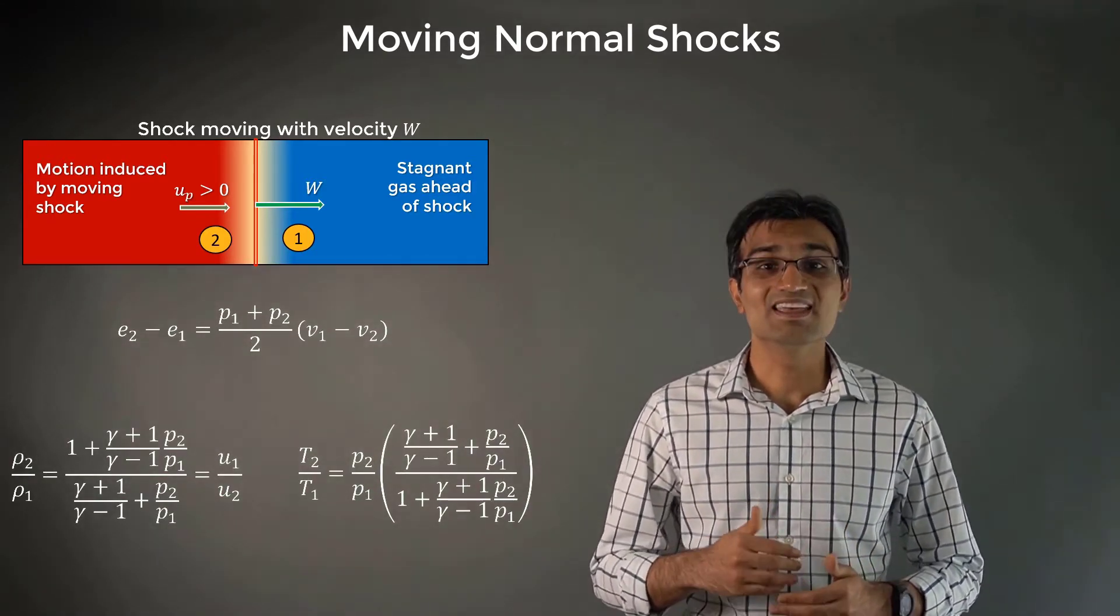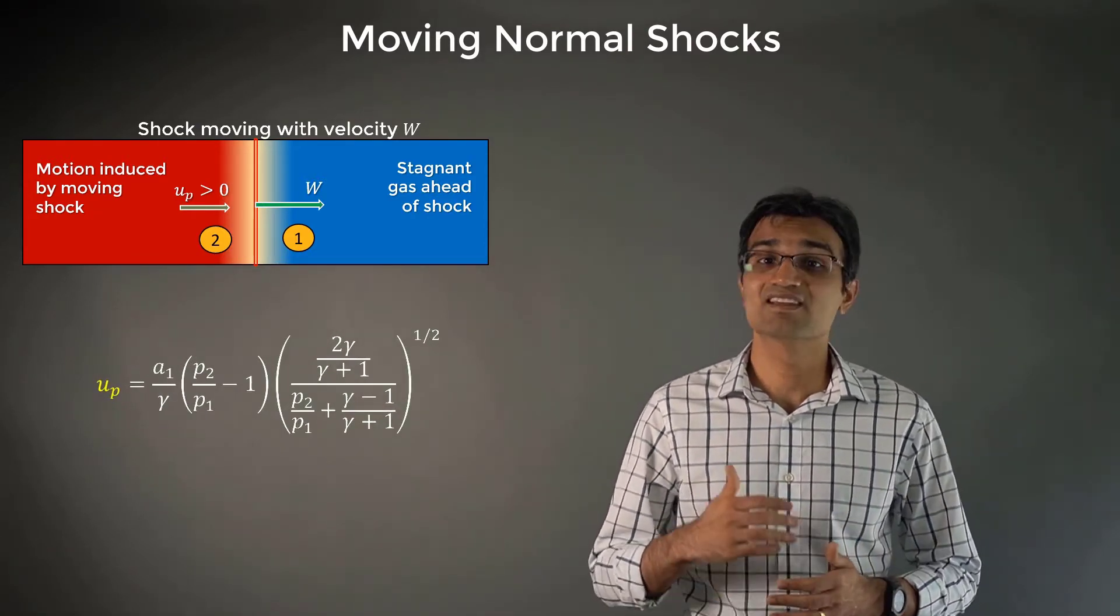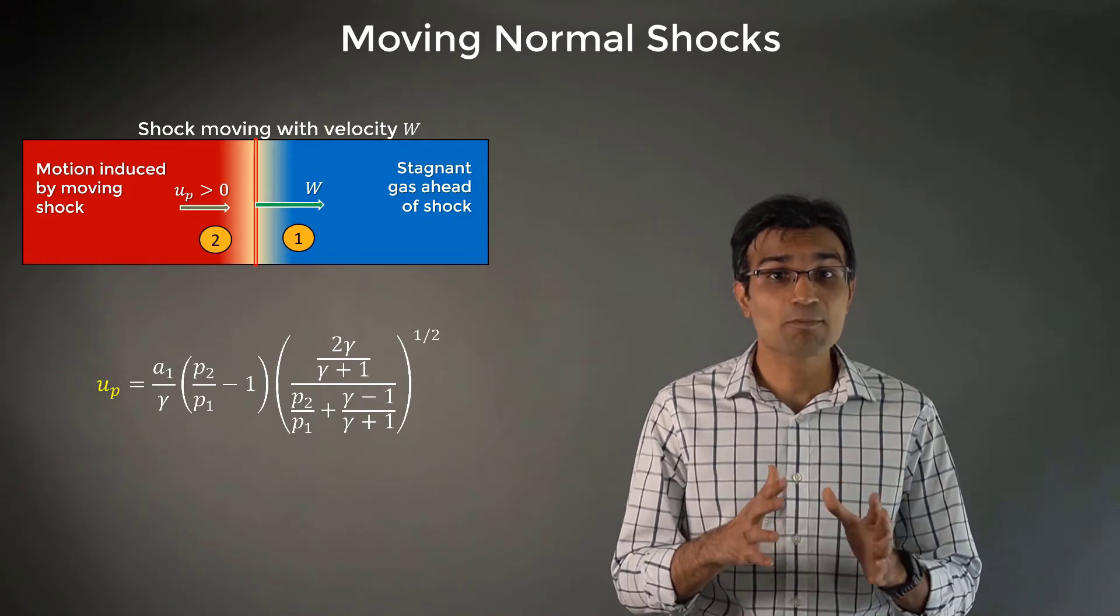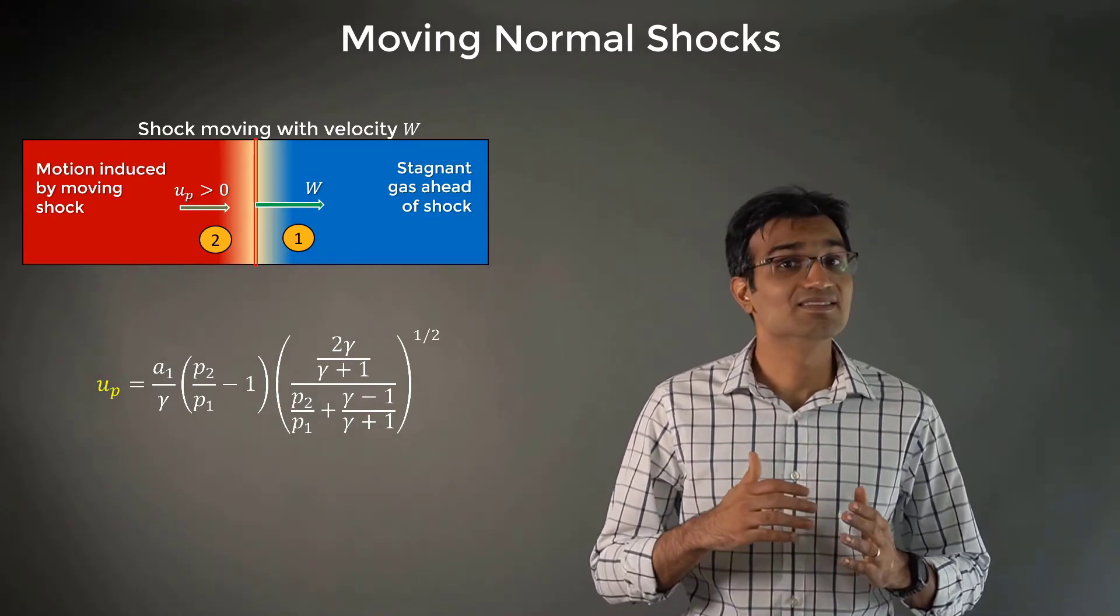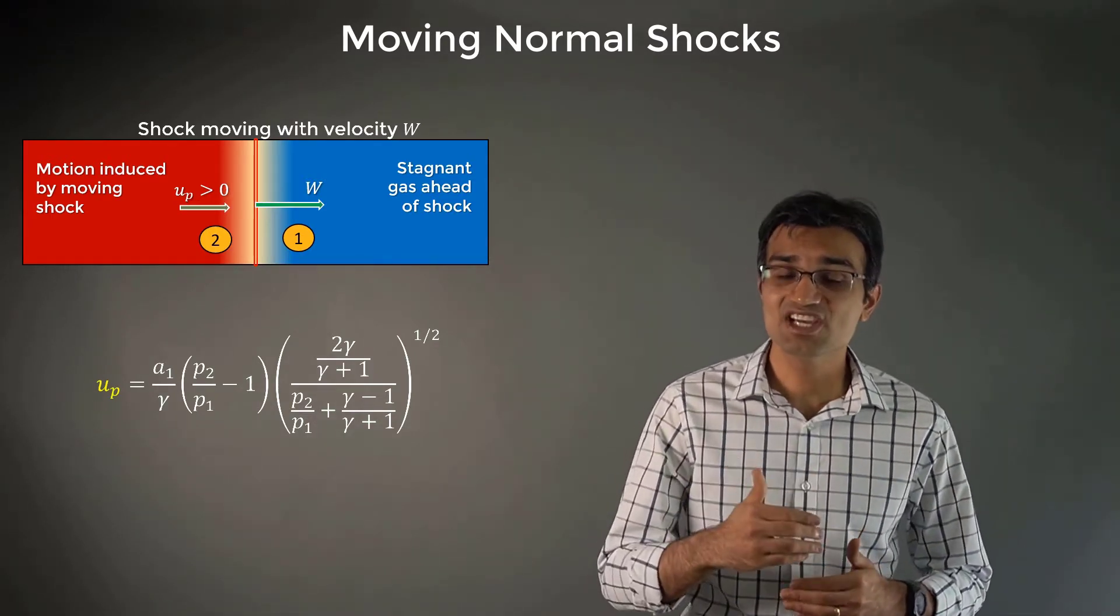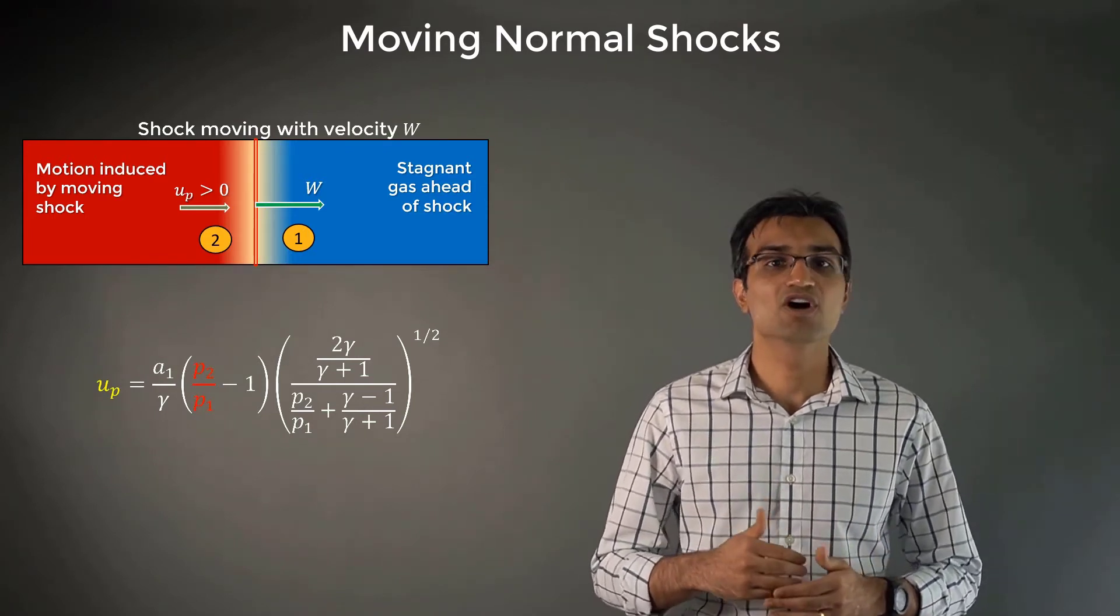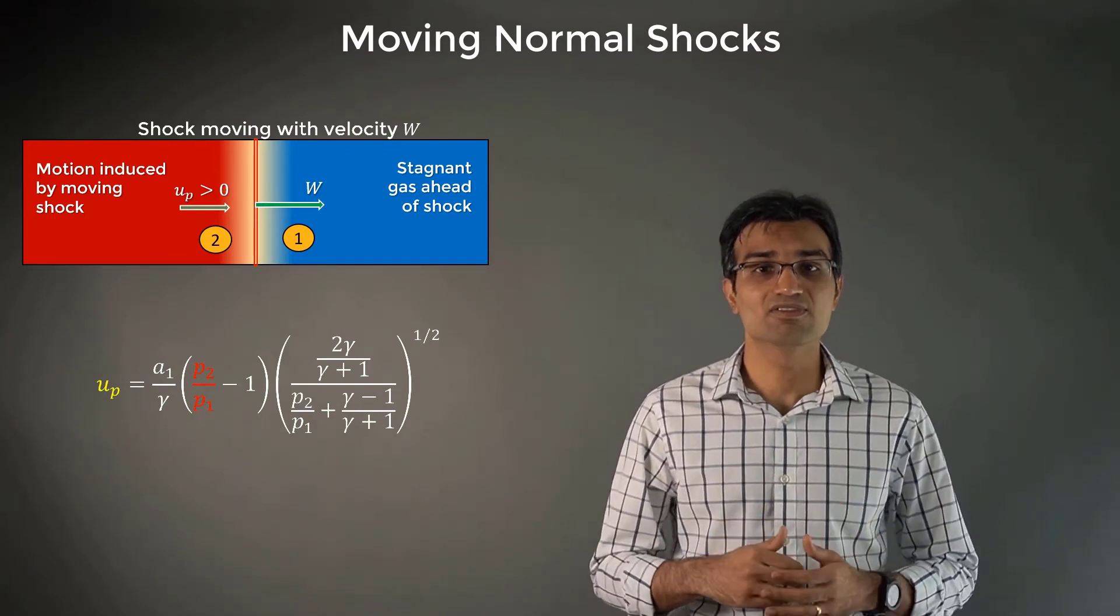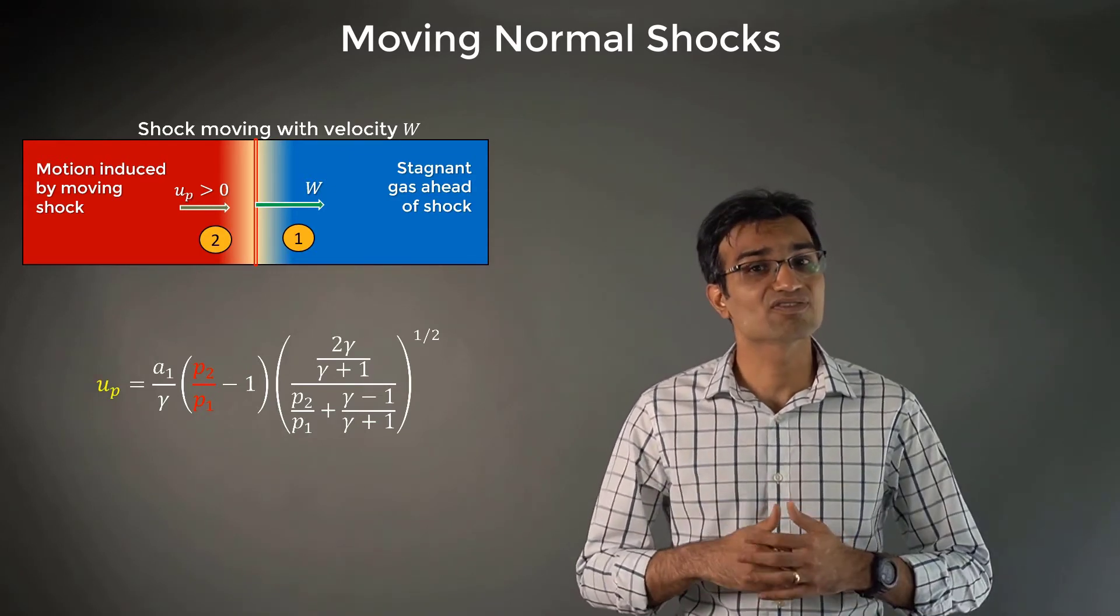UP is the velocity of the moving gas behind the shock as experienced by an observer in the laboratory frame of reference and is given by this expression. You can see that just like W, UP depends on pressure ratio across the wave and the speed of sound of the gas ahead of the wave.